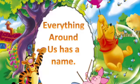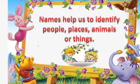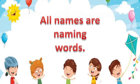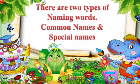Children, do you know everything around us has a name. Names help us to identify people, places, animals or things. Is it true? Yes, even I have a name, you have a name. All names are naming words. There are two types of naming words.